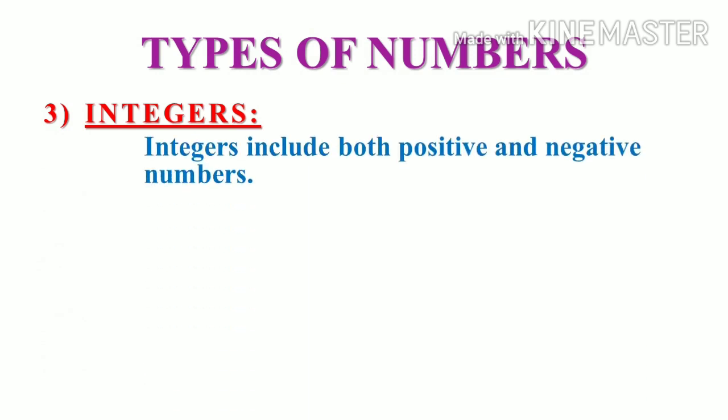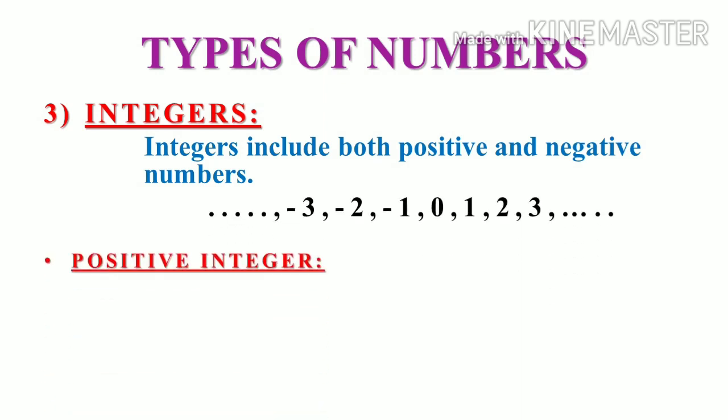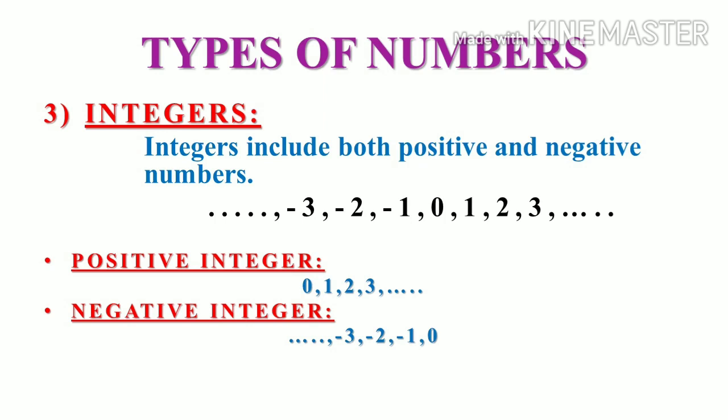Since it includes both positive and negative numbers, we can subdivide these integers into two: positive and negative integers. Positive integers consist of positive numbers, negative integers consist of negative numbers. We have to note that zero is included in both the case.